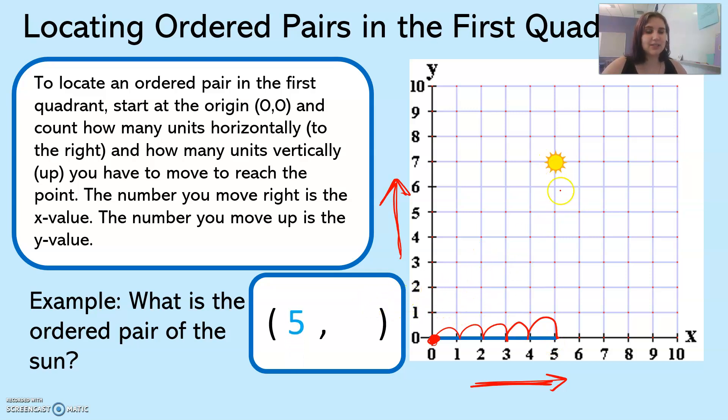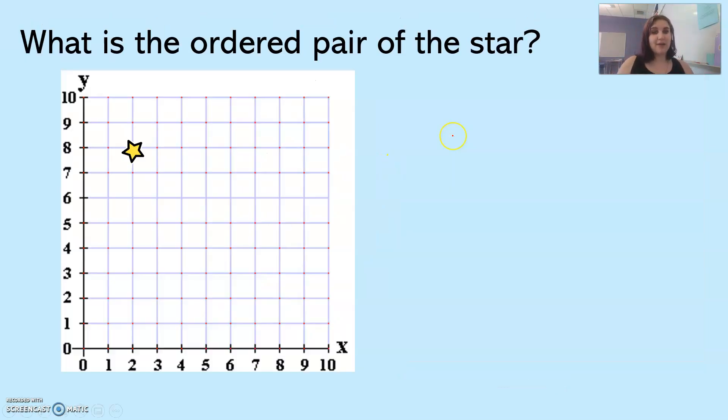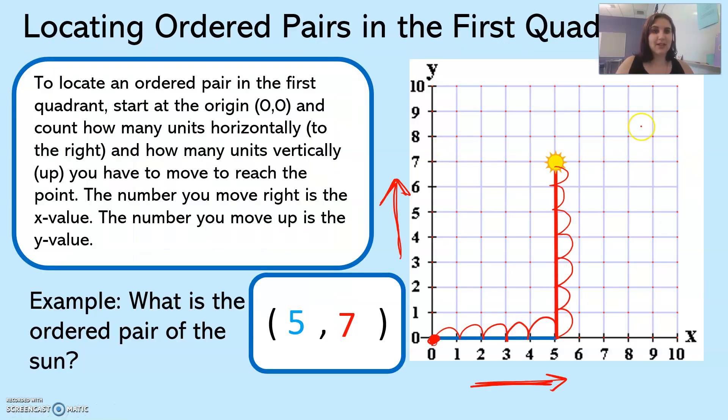And then how many places do I need to go up to get to the sun? Let's see. One, two, three, four, five, six, seven. So my y value is seven. That's how many I went up. My ordered pair of the sun is five comma seven.